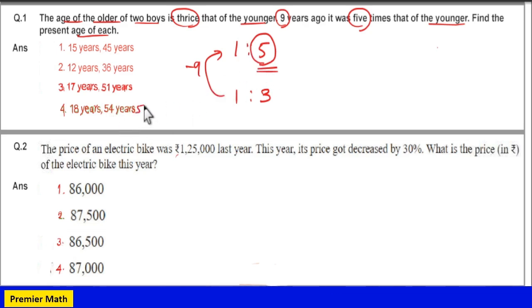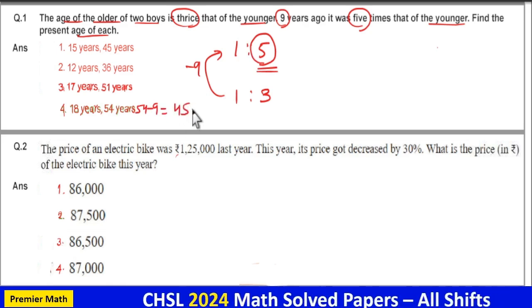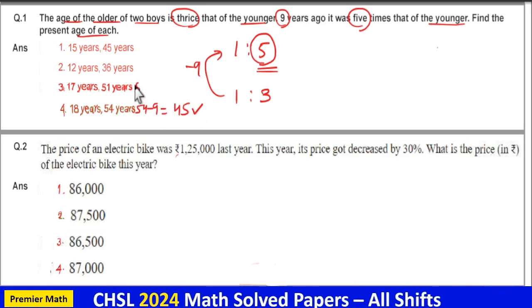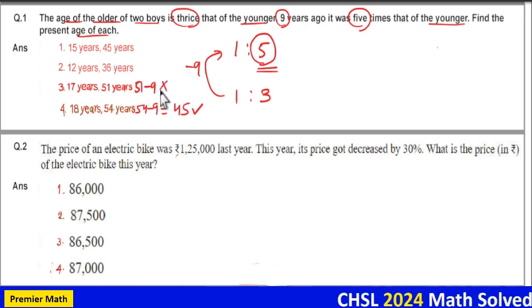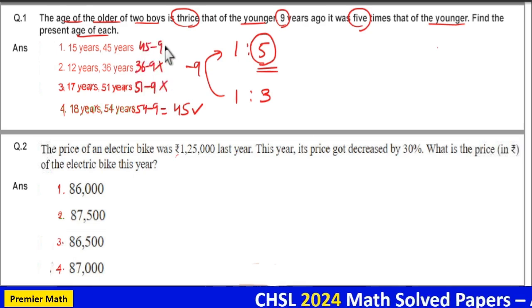Here 54 minus 9 is 45 which is a multiple of 5. Now 51 minus 9 not a multiple of 5, 36 minus 9 not a multiple of 5, 45 minus 9 not a multiple of 5.